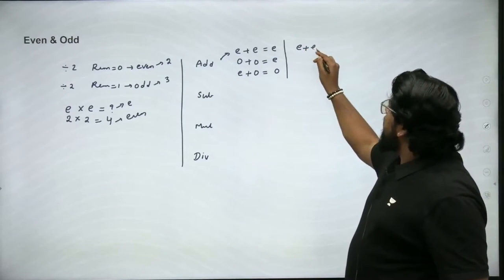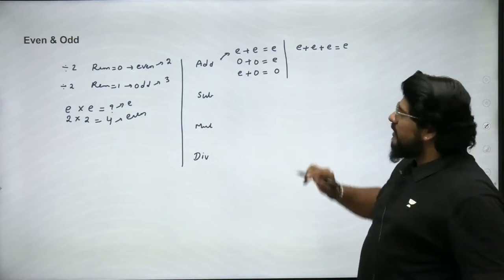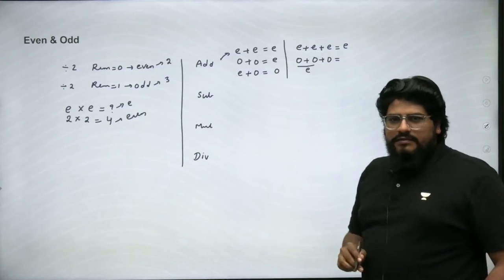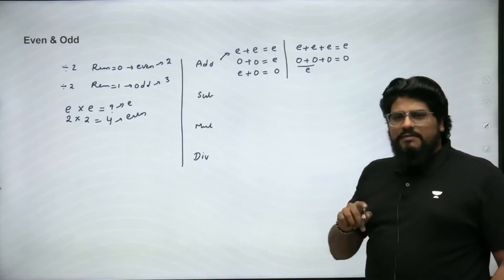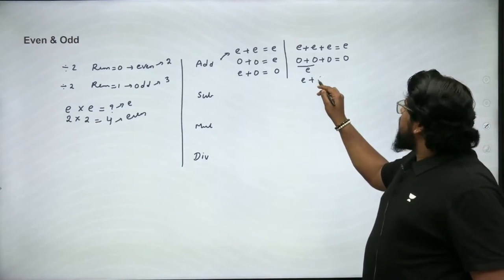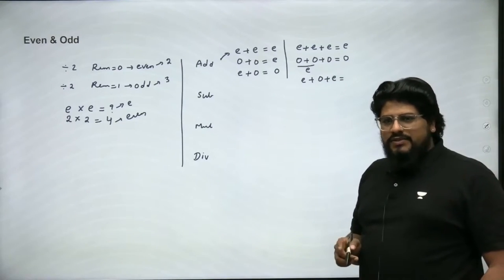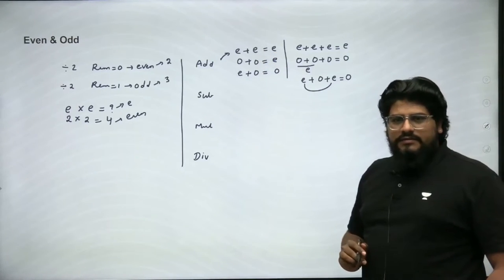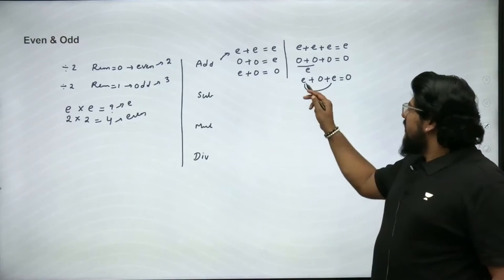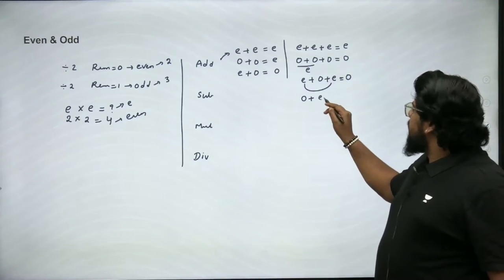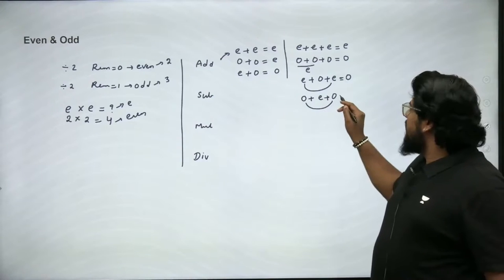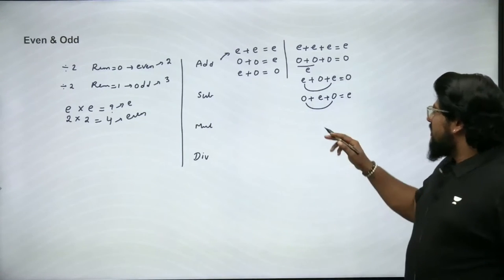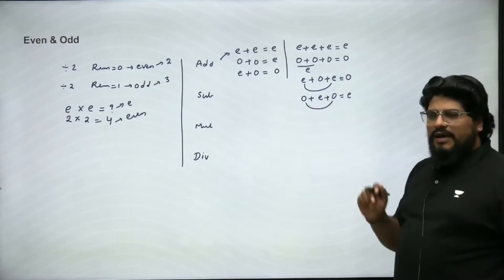What happens when a third number is added? Even + even + even: 2 + 2 + 2 = 6, which is even. What if we add three odd numbers? Two odd numbers give an even, and even + odd gives an odd, so 1 + 1 + 1 = 3, which is odd. Even + odd + even: 2 + 1 + 2 = 5, which is odd. Since even + odd is odd and odd + even is odd, the result is odd. Even + odd gives odd, and even + even gives even, so the rule holds.